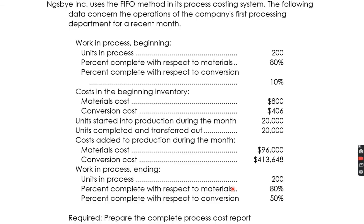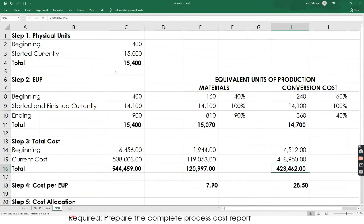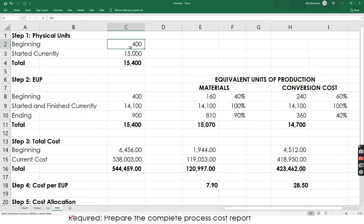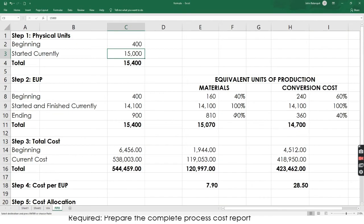Now let's proceed to the FIFO method practice problem. The process cost will use the FIFO method with similar formula but different categorization of completed items. Step 1: determine the physical units. According to the problem, 200 units are from beginning inventory and 20,000 units were started this month. So we enter 200 and 20,000.